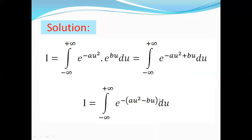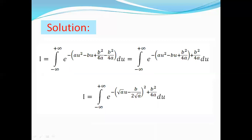Now let's find the canonical form of this expression. We will add b²/(4a) and subtract b²/(4a). This term is equal to (√a · u minus b/(2√a))², and the remaining term is b²/(4a). So I becomes the integral from minus infinity to plus infinity of e to the power minus (√a · u minus b/(2√a))² plus b²/(4a).